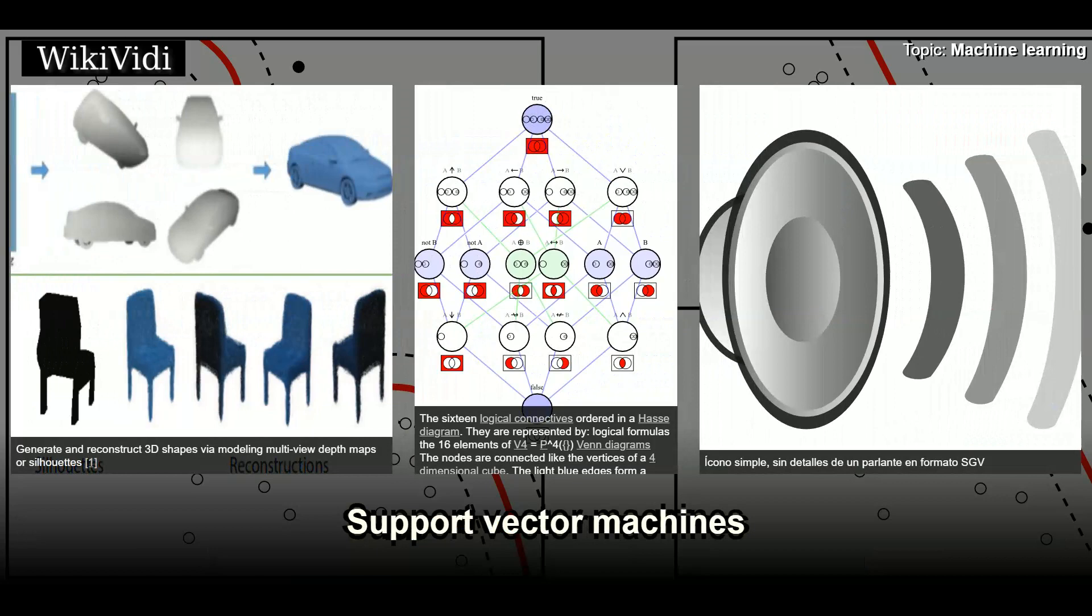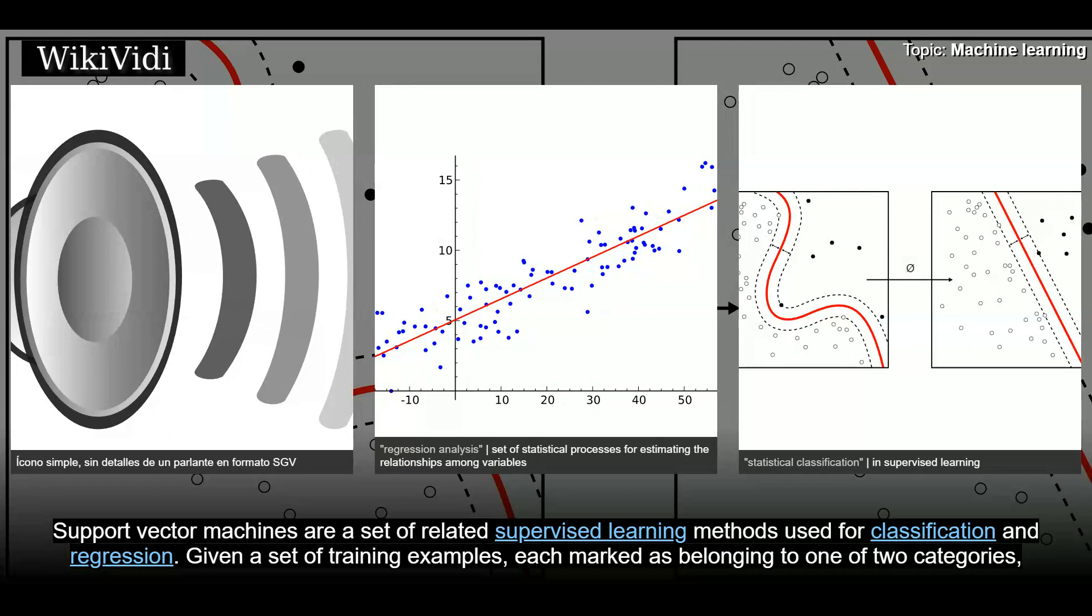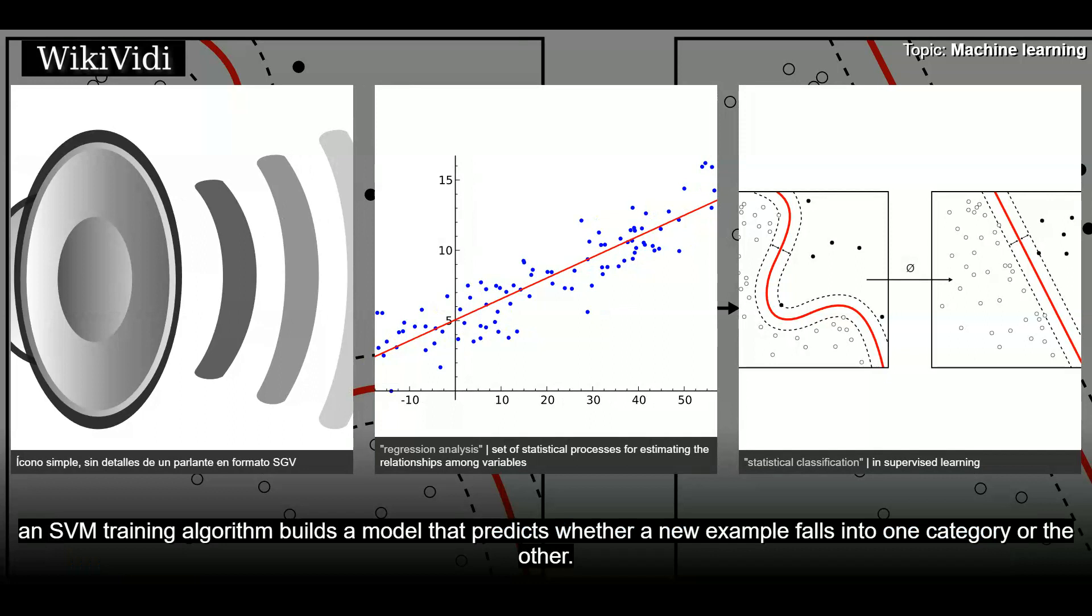Support vector machines. Support vector machines are a set of related supervised learning methods used for classification and regression. Given a set of training examples, each marked as belonging to one of two categories, an SVM training algorithm builds a model that predicts whether a new example falls into one category or the other.